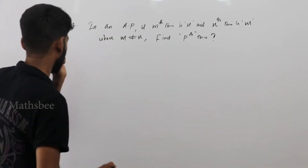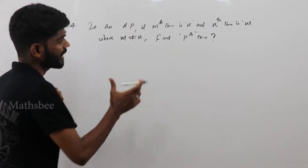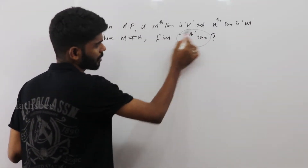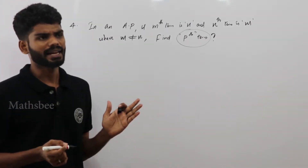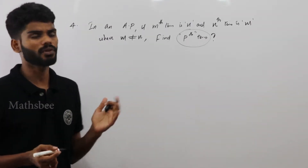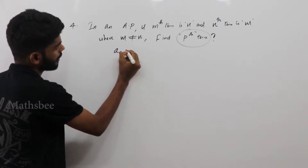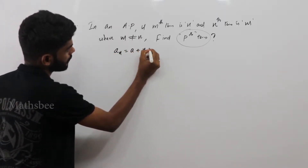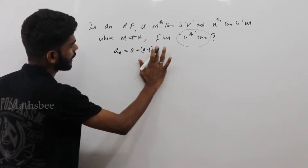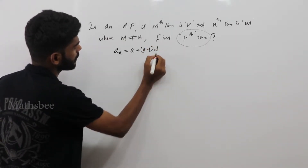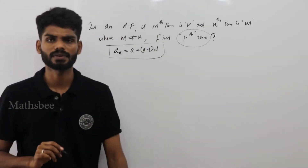Let's check the problem. First, let's talk about the Pth term. In AP, we learn the general formula: the Nth term equals A plus (N minus 1) times D.